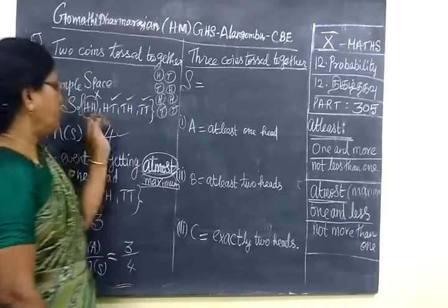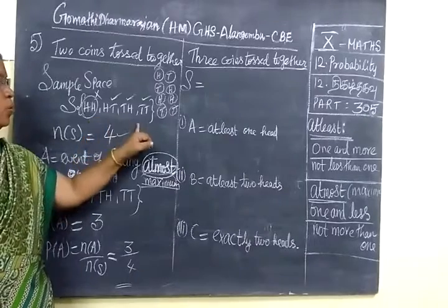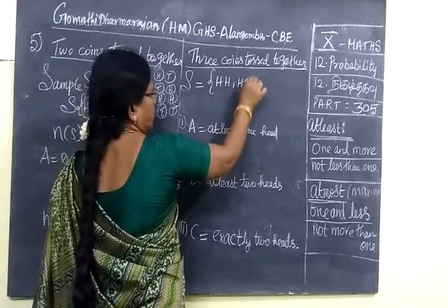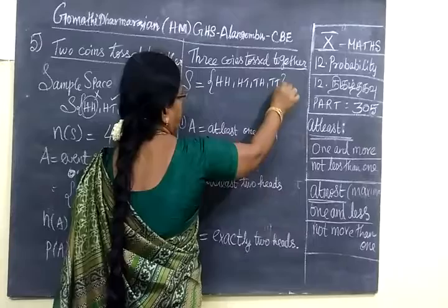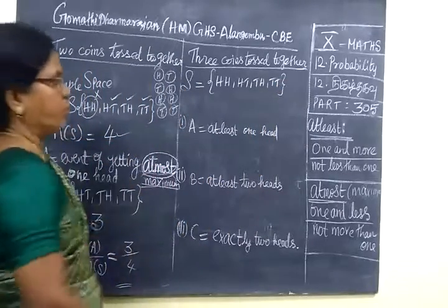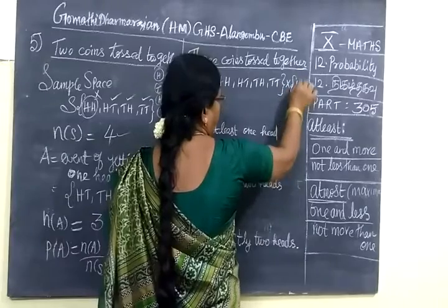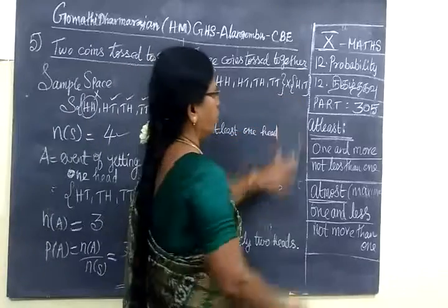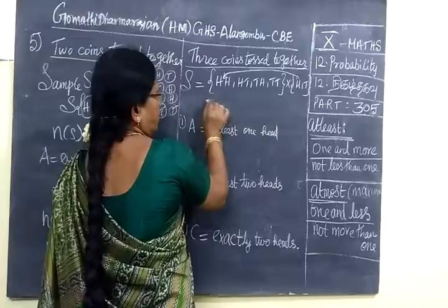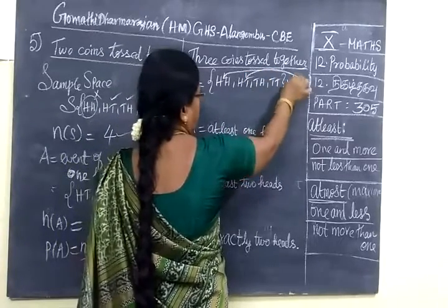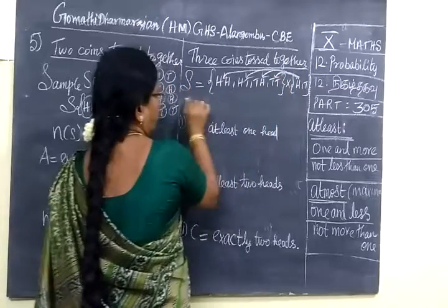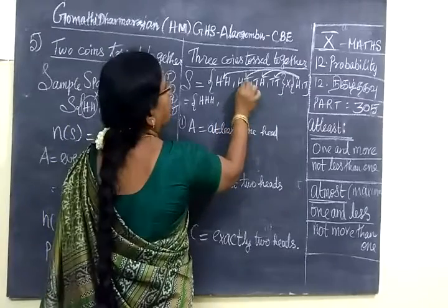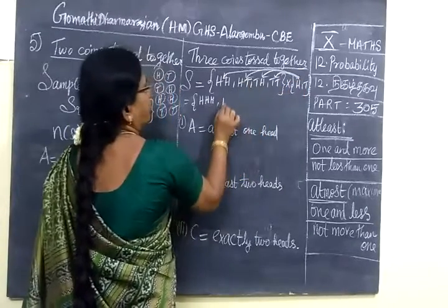Then next we are taking 3 coins tossed together. First we will see sample space for 2 coins. Now we are seeing 3 coins. So first 2 coins you write. 3 coins. In this way, 2 coins sample space is this. Then 3 coins mean 1 more coin. So this is third write. This is 2 coins. Third one, now you take. Then second one. Then third one. Then third one. So you can write.